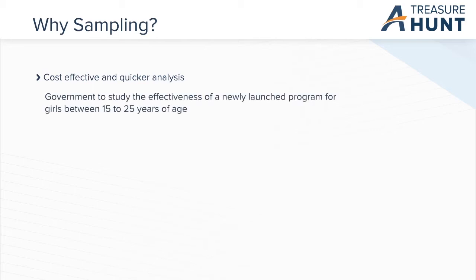But why do we work on samples rather than population? Firstly, it is cost effective and quick. Think of a scenario where a government of a country wants to study the effectiveness of a newly launched program for girls between 15 to 25 years of age.